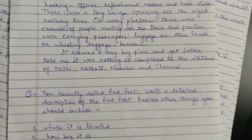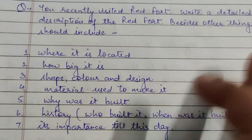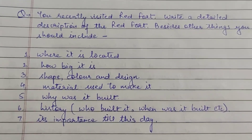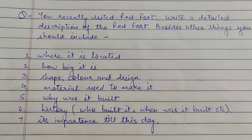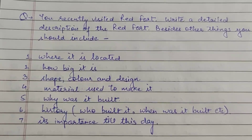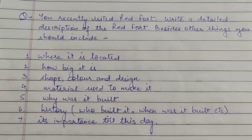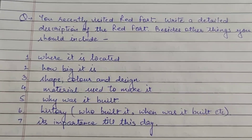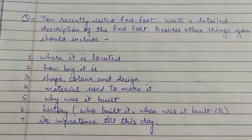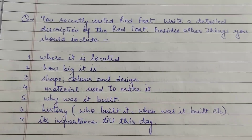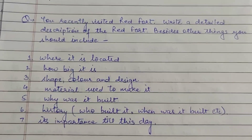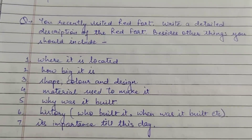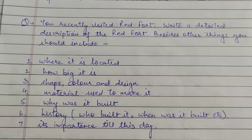Now this is a practice question for you. Hints are given. This is a description of a place — you recently visited Red Fort. Write a detailed description of the Red Fort. Besides other things you should include: where it is located, how big it is, its shape, color and design, material used to make it, why it was built, history, who built it, when was it built, and its importance till this day. You can use the hints here.